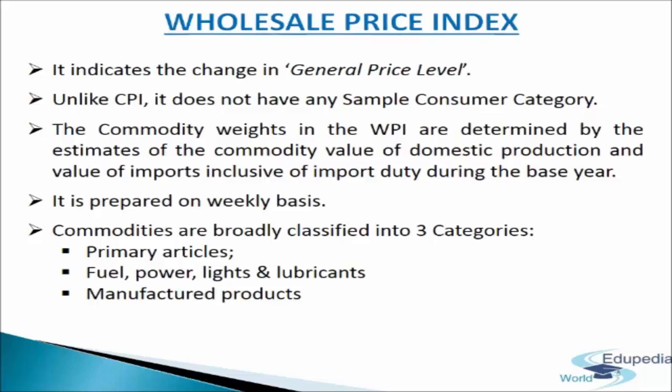In India, the first wholesale price index numbers were compiled in 1947. Commodities are broadly classified into three categories: Primary Articles, Fuel, Power, Lights and Lubricants, and Manufactured Products.